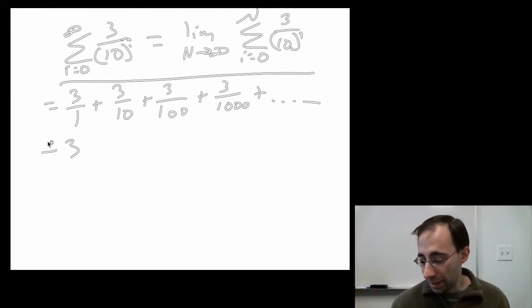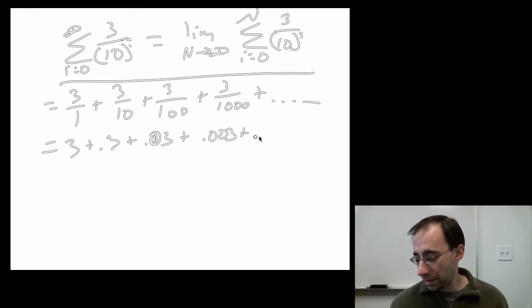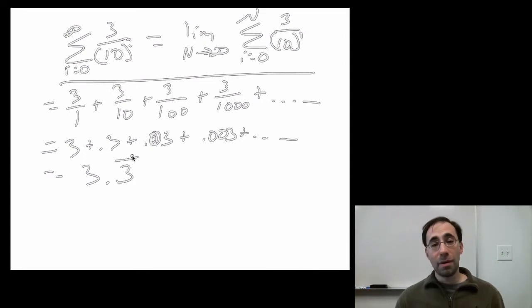Well, that's 3 plus 0.3 plus 0.03 plus 0.003 plus forever equals 3.3 bar where the bar means repeating. That's 3.333 forever, which is the same thing as 3 and a third. This is similar to the example in the book. This is the sum of a series.